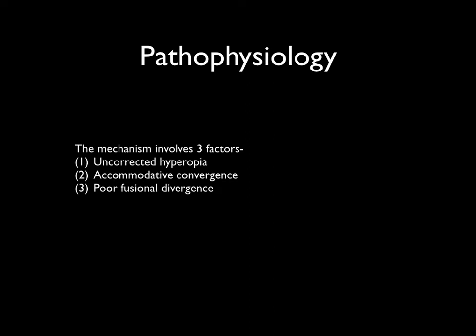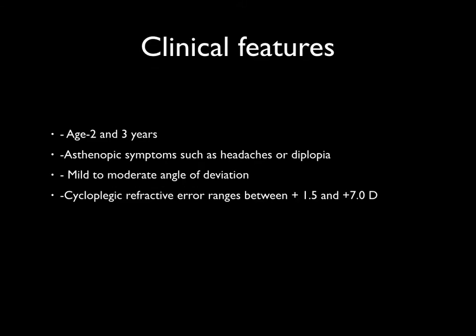Coming to the first type, refractive accommodative esotropia. These patients have high uncorrected hyperopia, usually more than plus 3. This high hyperopia leads to accommodative convergence, and if the patient's fusional divergence amplitudes are small, it leads to esotropia. It usually starts around two to three years of age, and the child might complain of asthenopic symptoms like headache or diplopia.